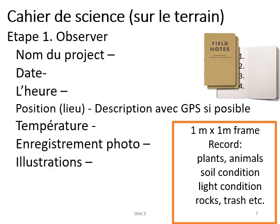Now we are going to do an activity outside that will take you through the first couple steps of the scientific method. We are going to use field journals — you can just take your notebooks from class. Every time you do an experiment or make observations, you need to record information such as the name of the project, the date, the time, where you are located, and if you can get GPS coordinates from your phone, that would be helpful.